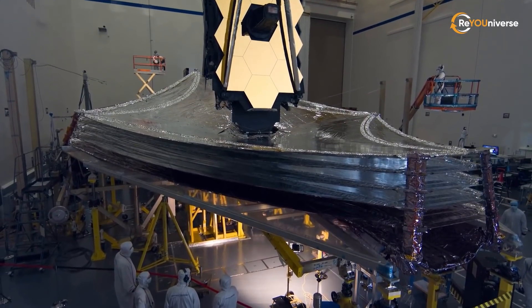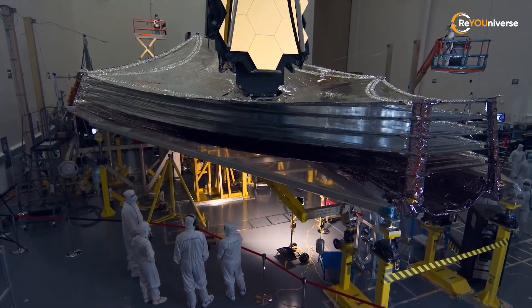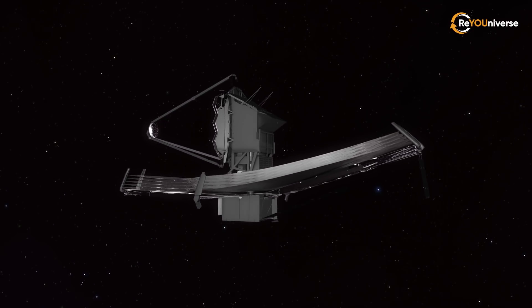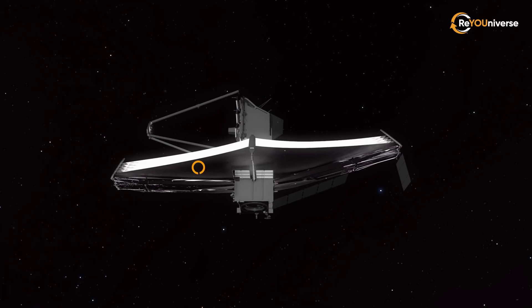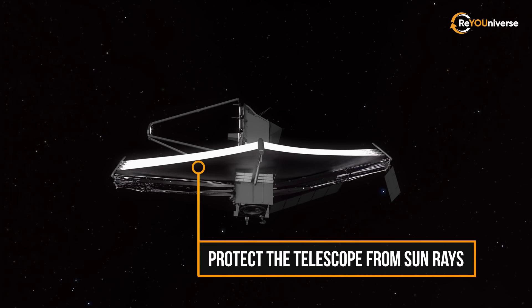If the purpose of the mirror is more or less clear to everyone, some might wonder as to the purpose of its largest part, its role is to protect the telescope from sun rays.